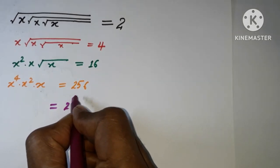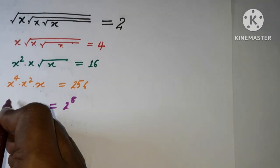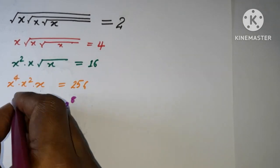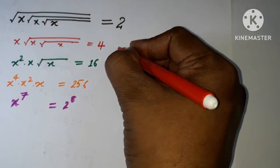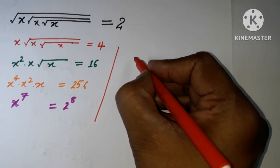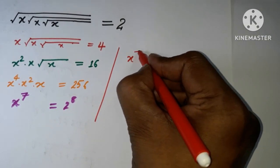And here x to the power 7. So that can be written as x power 7 equal to 2 to the power 8.